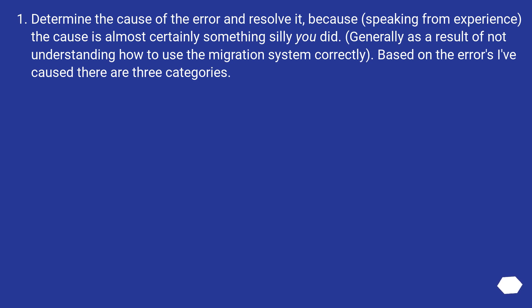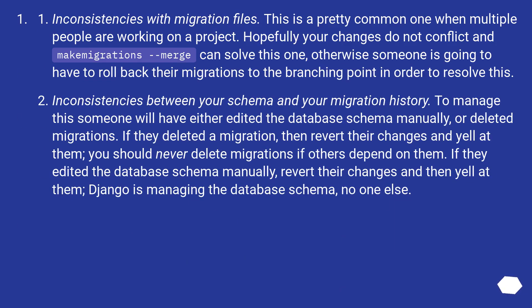Based on common errors, there are three categories. First: inconsistencies with migration files — common when multiple people work on a project. Run makemigrations --merge to solve it; otherwise someone must roll back to the branching point. Second: inconsistencies between your schema and your migration history, caused by someone manually editing the database schema or deleting migrations. Revert those changes — Django manages the database schema, no one else should.